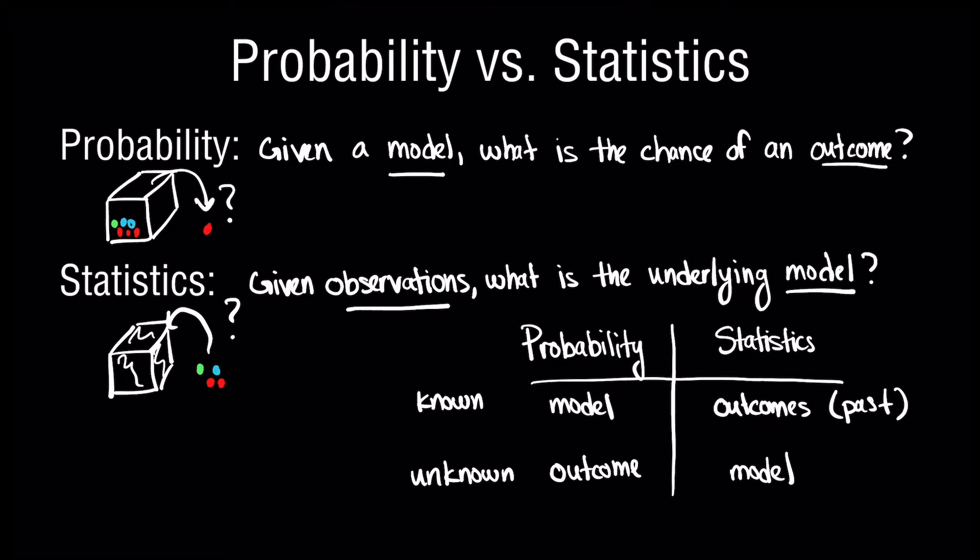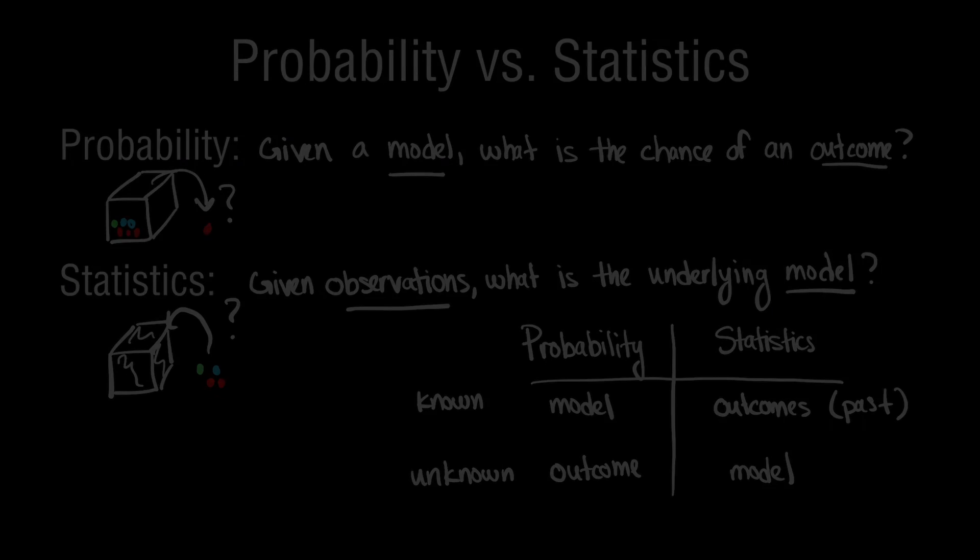Now that we've done a solid job of differentiating the field of probability—that is, a model for a probabilistic problem is given and the outcomes are unknown—and statistics, where some observations are known but the underlying model is uncertain, let's try to understand why we tend to bundle these two terms together.